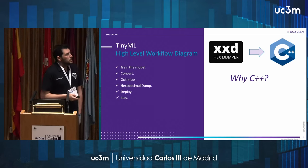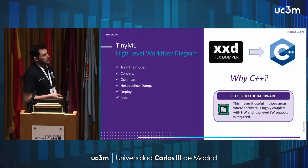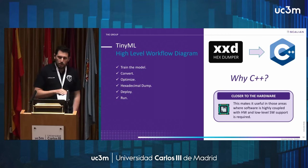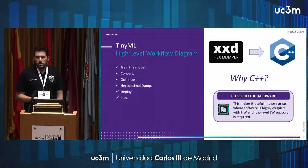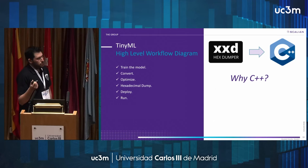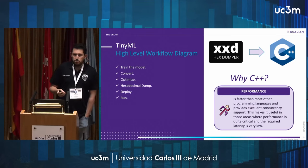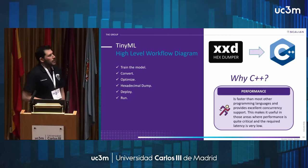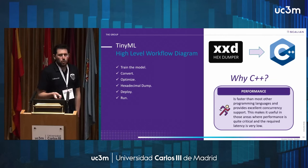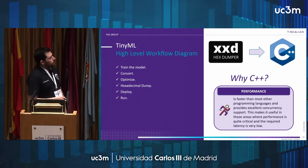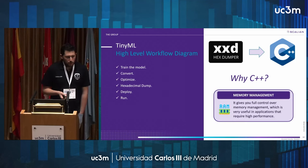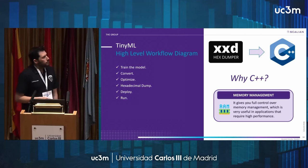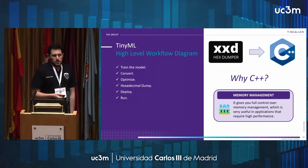Why C++? First, C++ is closer to the hardware, which is very useful in applications where software is highly coupled with hardware and low-level support is required. Second, regarding performance, C++ is faster than many other languages and provides excellent concurrency support — very useful in areas where performance is critical and required latency is very low. Third, regarding memory, C++ allows full control over memory management, which is very important in performance-critical applications.